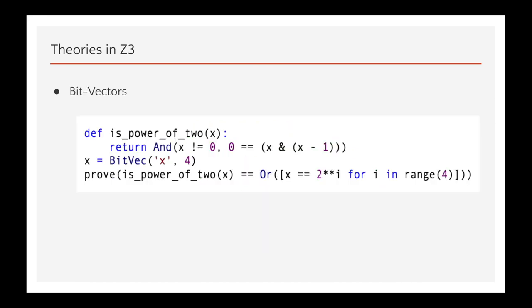Next are bit vectors. Z3 mostly uses a bit blasting approach to decide the bit vectors. So, bit blasting is a reduction of bit vector constraints to propositional logic by treating each bit in a bit vector as a propositional variable. So, to test whether a bit vector is a power of 2, we can use the combination of bitwise operations and subtraction.